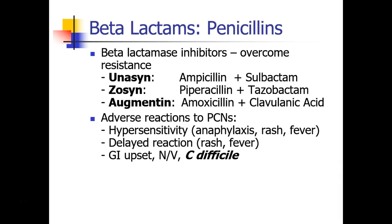One method of resistance is for bacteria to synthesize beta-lactamase. So in turn, we have designed beta-lactamase inhibitors, which overcome that resistance mechanism. These are antibiotic combinations you may be familiar with — they include Unasyn, Zosyn, and Augmentin. Each contains a penicillin — in these cases ampicillin, piperacillin, and amoxicillin — together with a beta-lactamase inhibitor: sulbactam, tazobactam, and clavulanic acid.